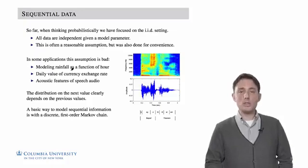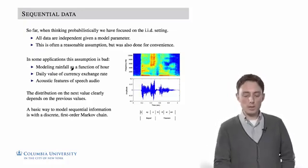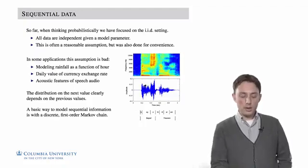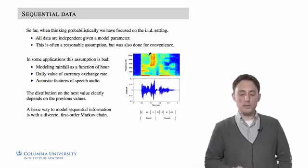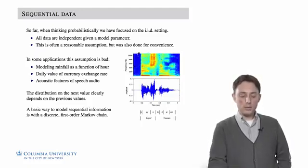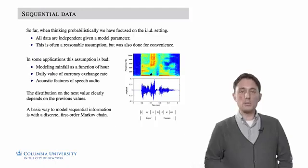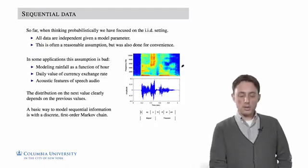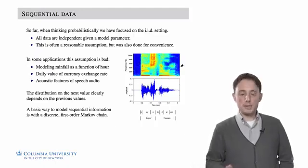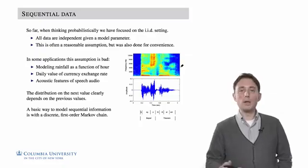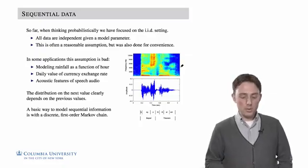If we wanted to model speech via some acoustic features that we extract, for example, here I show a signal that's where somebody is saying Bayes' theorem, and then we extract some acoustic features. Clearly, if we look at a column slice, there's a temporal dependence that exists in the data, and we would want to take that into consideration when modeling speech.